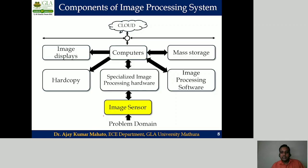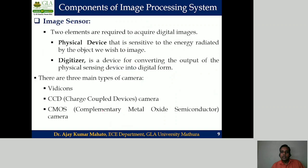The next component is the image sensor. The objective of the image sensor is to provide the digital image of your target object. An image sensor consists of two elements: one is called the physical device, and the other is called the digitizer.